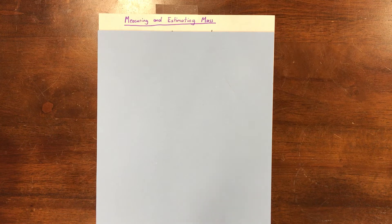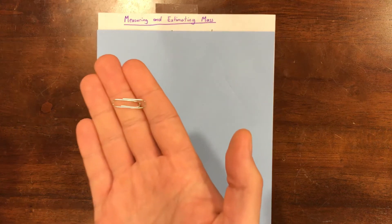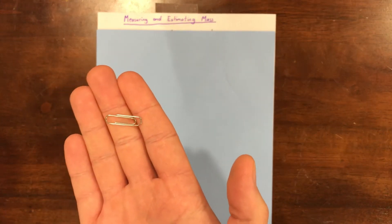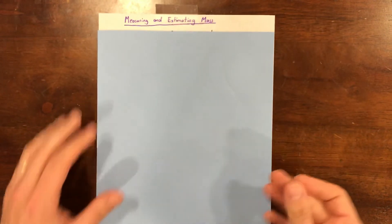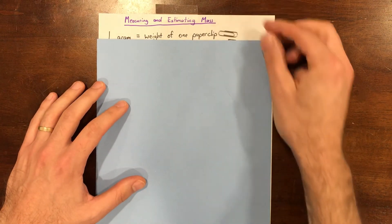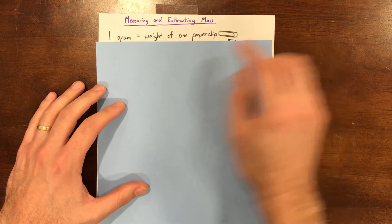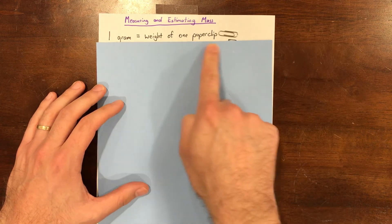The first is called a gram. A gram is about the weight of one paper clip. I have that written here, and I'll put the paper clip right there for us to remember. One gram equals the weight of one paper clip.